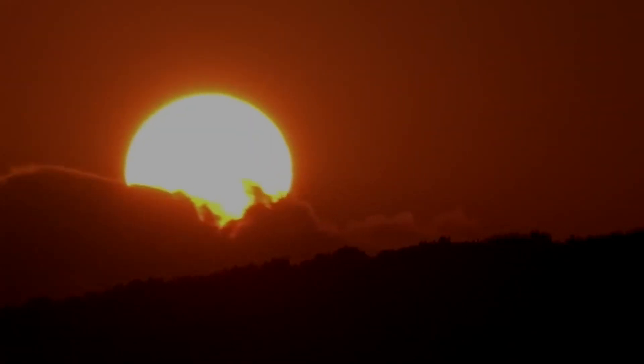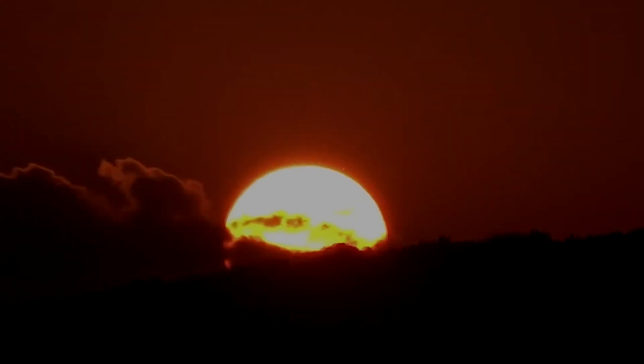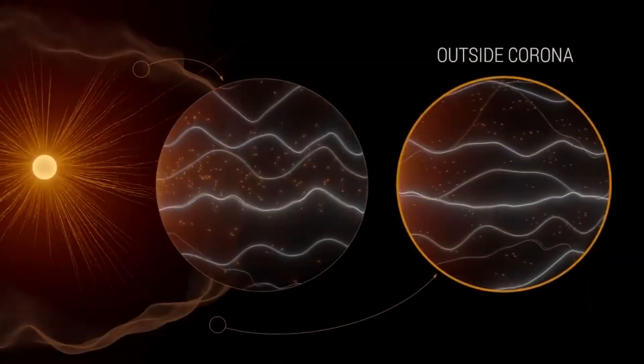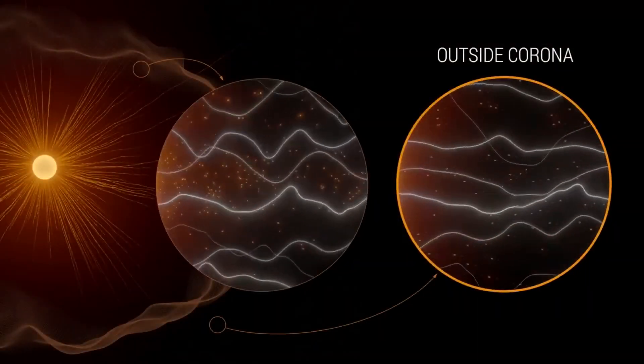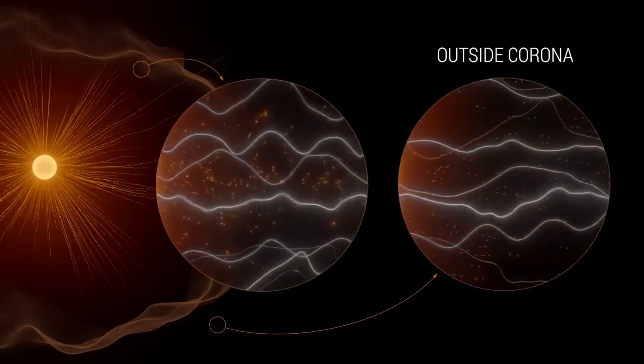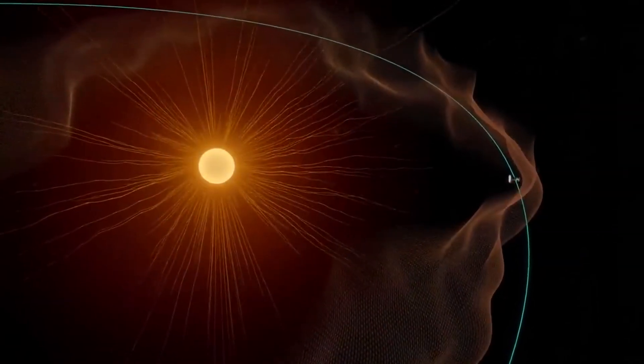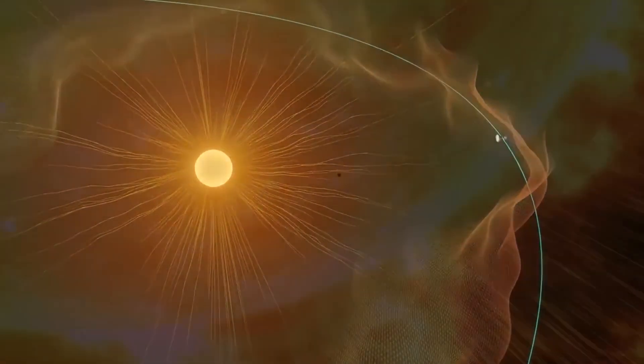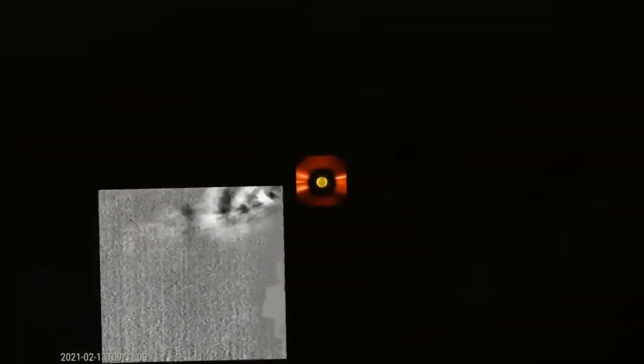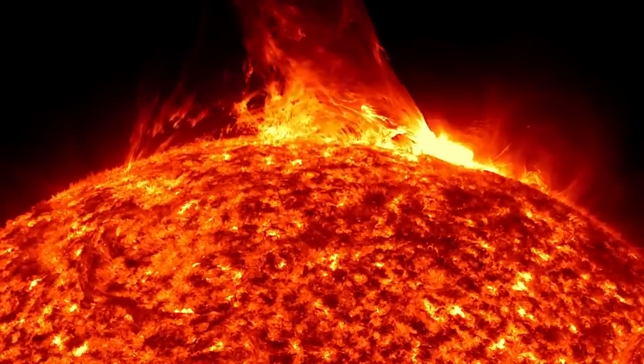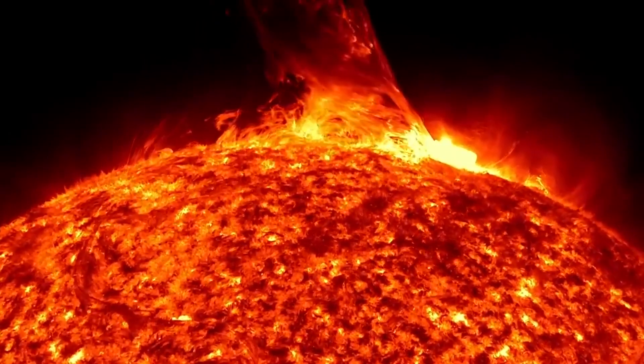Well, the extraordinary historic mission of the Parker Probe is revolutionizing our understanding of the Sun, where changing conditions can spread throughout the solar system, impacting the Earth and the other worlds. The Parker Probe travels through the Sun's atmosphere, closer to its surface than any spacecraft before it, encountering harsh conditions of heat and radiation in order to provide mankind with the closest possible observations of the star.